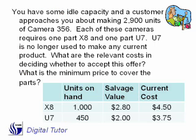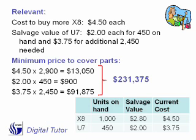Freeze your frame and study this one — see if you can work it, and then we'll discuss it together. The incremental cost of the $450 that we would have had to pitch at their salvage value is only the salvage value. And then the ones that we would have to go buy and replenish, those would be at current cost.